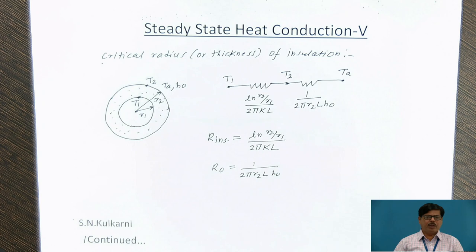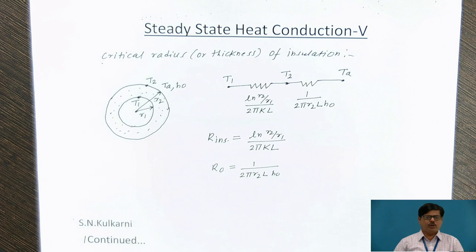However, in case of cylindrical and spherical surfaces, it is observed that when we put additional insulation, initially the heat flow rate increases, and after a certain radius of insulation or thickness of insulation, it decreases. So the radius or thickness of insulation at which the heat loss is maximum is called as the critical radius of insulation.